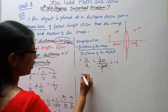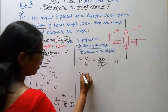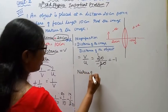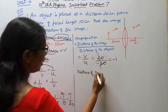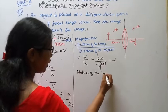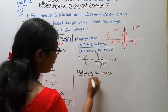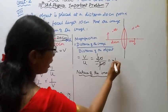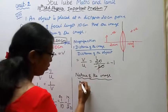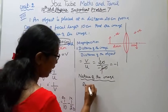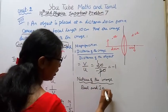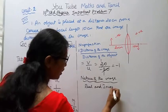When magnification is negative, the nature of the image is real and inverted. So the nature of the image is: real and inverted.